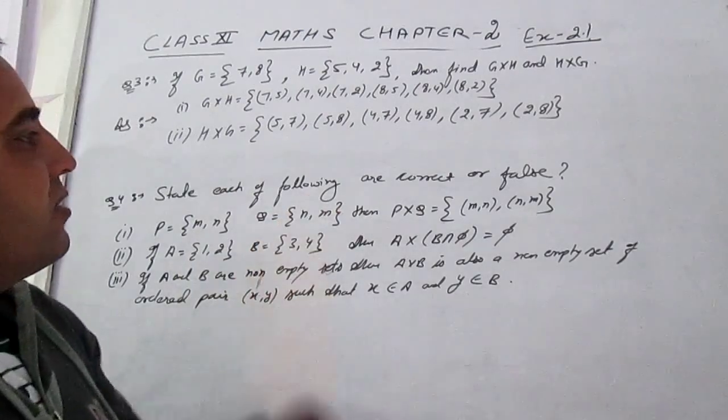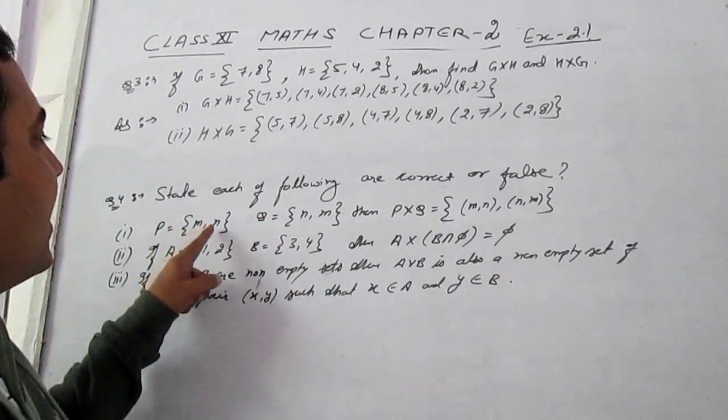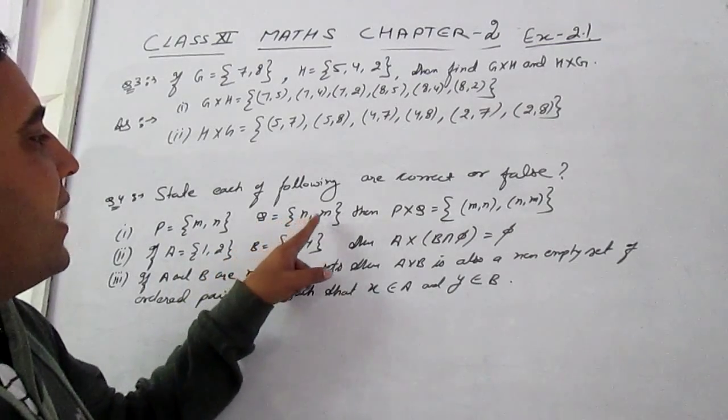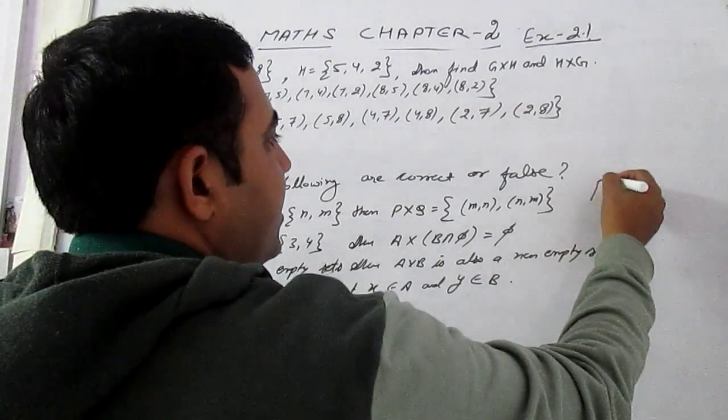Now, question number 4. State each of the following are correct or false. First one is, set P elements are m, n, Q has elements n, m, then P cross Q is equal to (m,n), (n,n), (n,m). It is false.